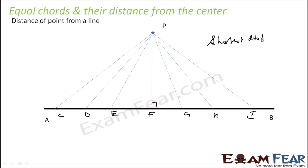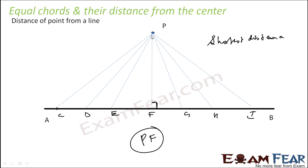And then you will observe, if you draw this on a piece of paper, that PF is the shortest, where this angle is 90 degrees. And this is nothing but the length of the perpendicular — the length of perpendicular from a point to the line. This is the shortest distance.